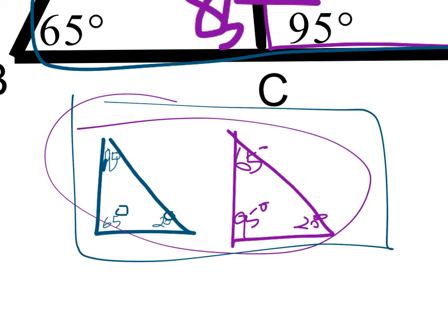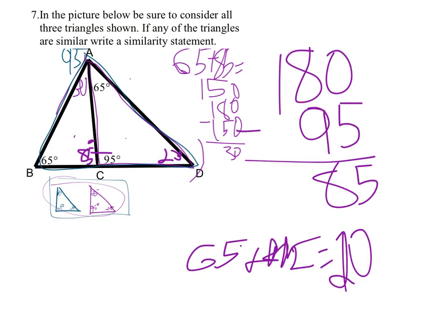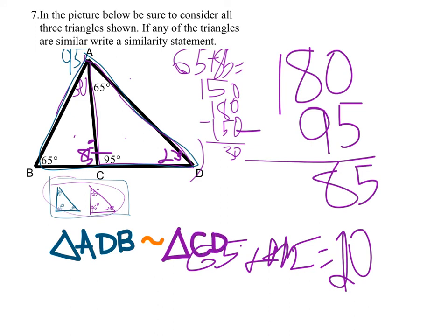That is correct. The final thing is to write the similarity statement. We have triangle ADB — this one is similar to the smaller triangle. A corresponds with C, D is D, and B corresponds with vertex A, so that is the similarity statement.